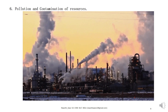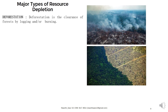Pollution depletes our resources. Deforestation is the clearance of forest by logging and burning. The timber industry, for example, completely deforests areas for industrial purposes, and we do not replant forests at the same rate. Forest fires, such as the Amazon forest fire, also damage the base of the ecosystem.